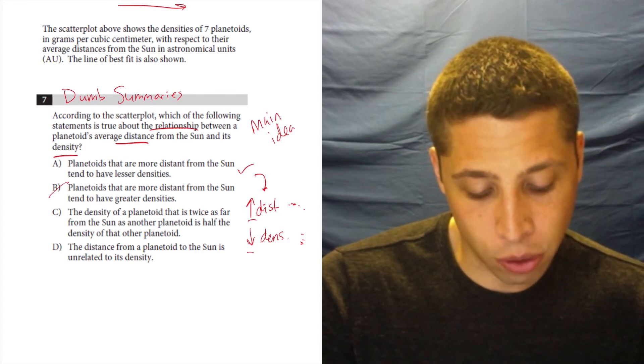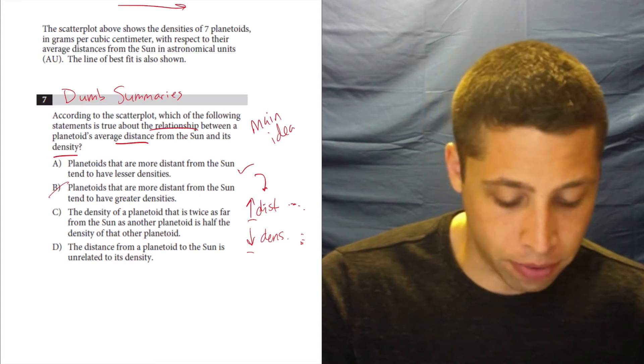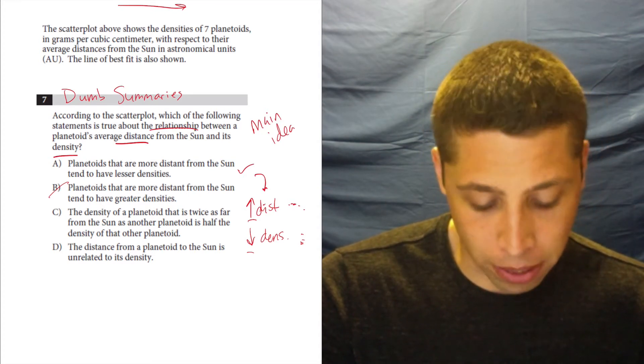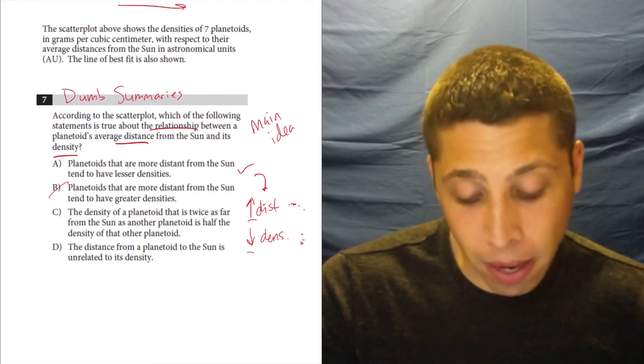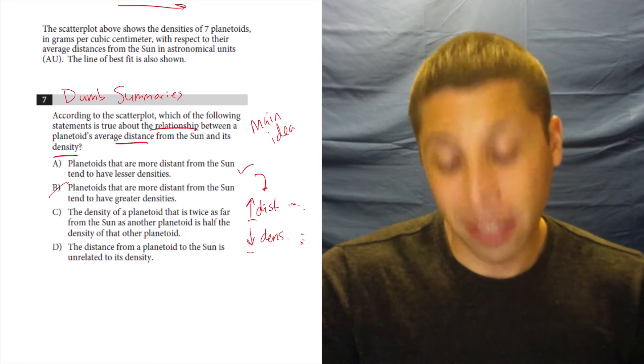C, the density of a planetoid that is twice as far from the sun as another planetoid is half the density of that other planetoid. Look, I'm not going to bother interpreting that. I kind of know it's wrong because it's too specific. It's too strong.